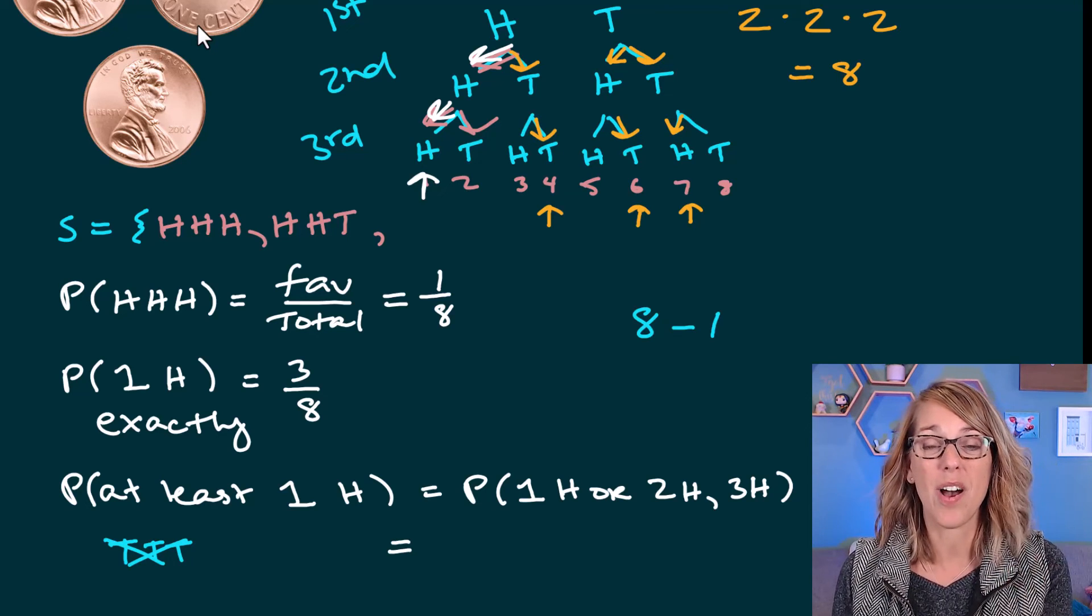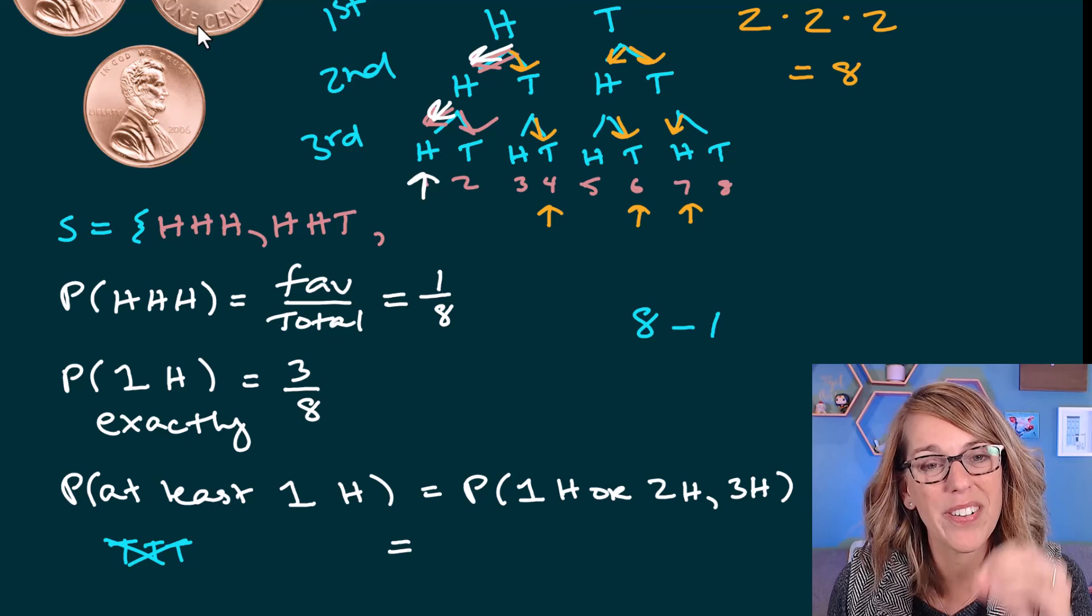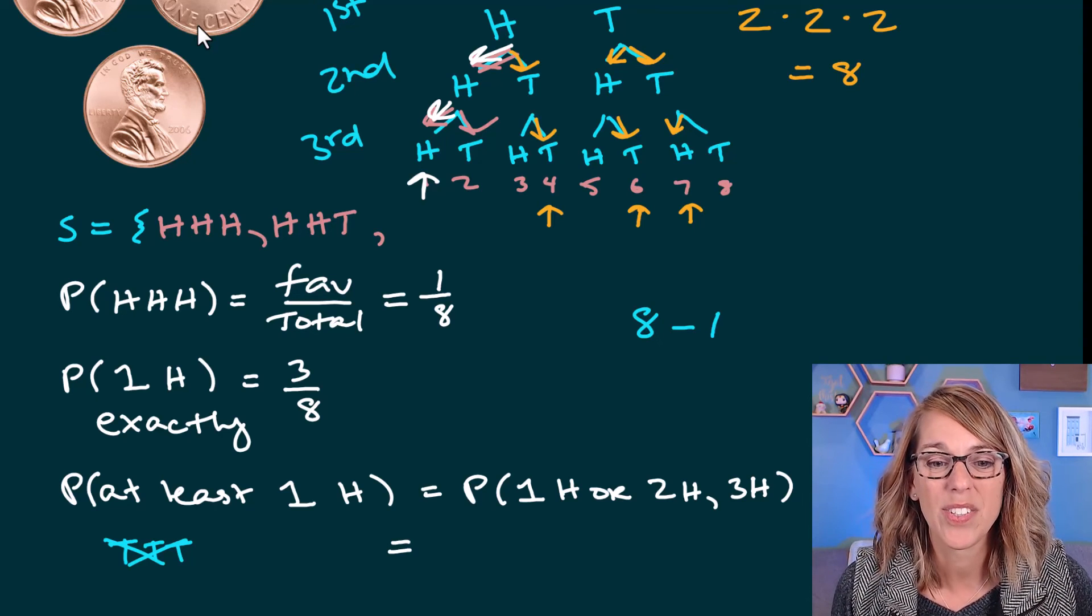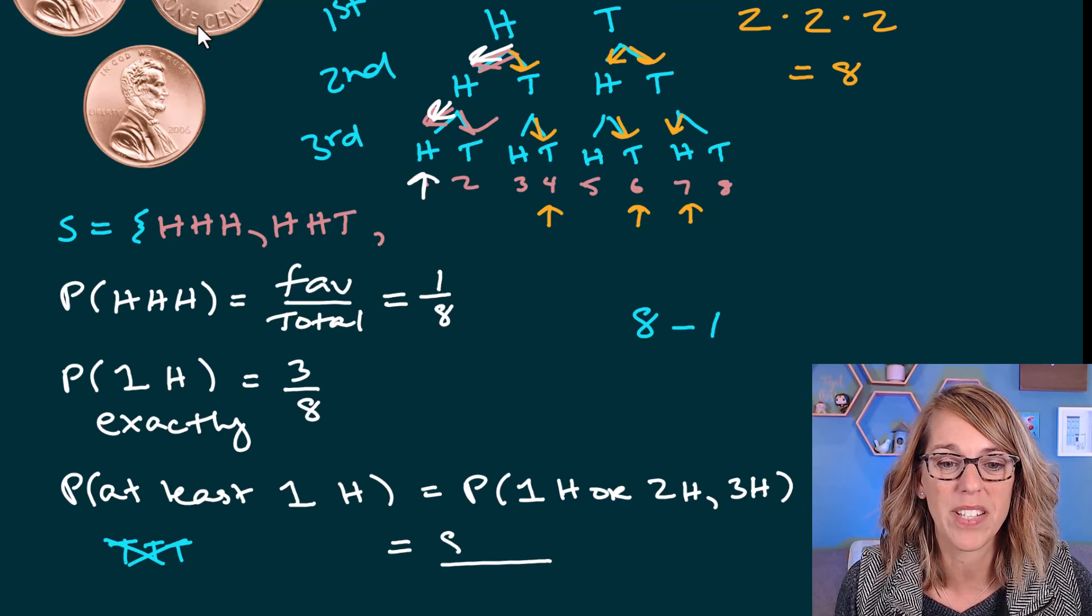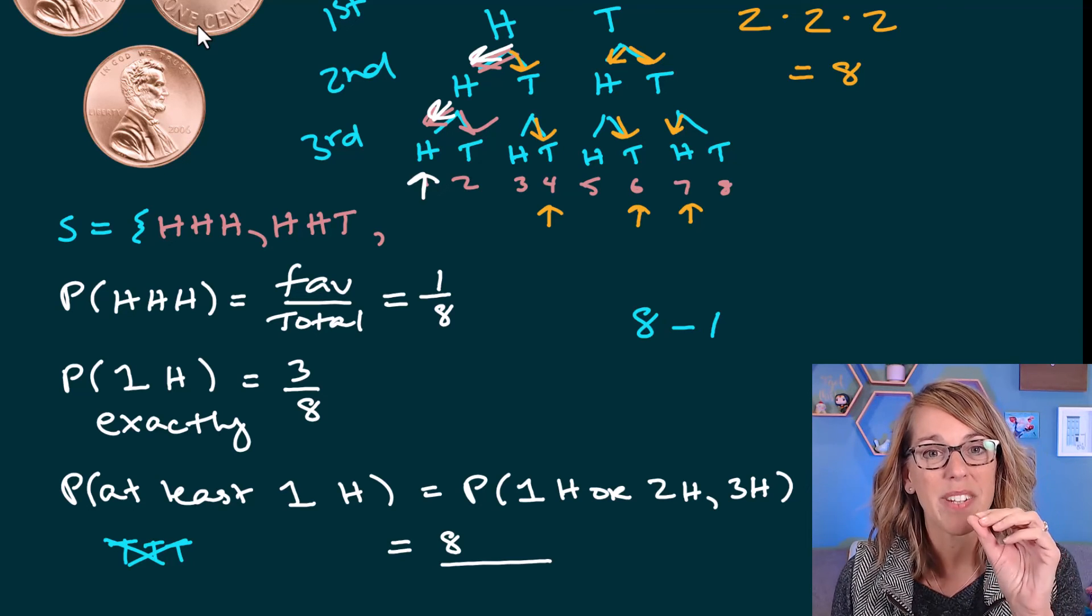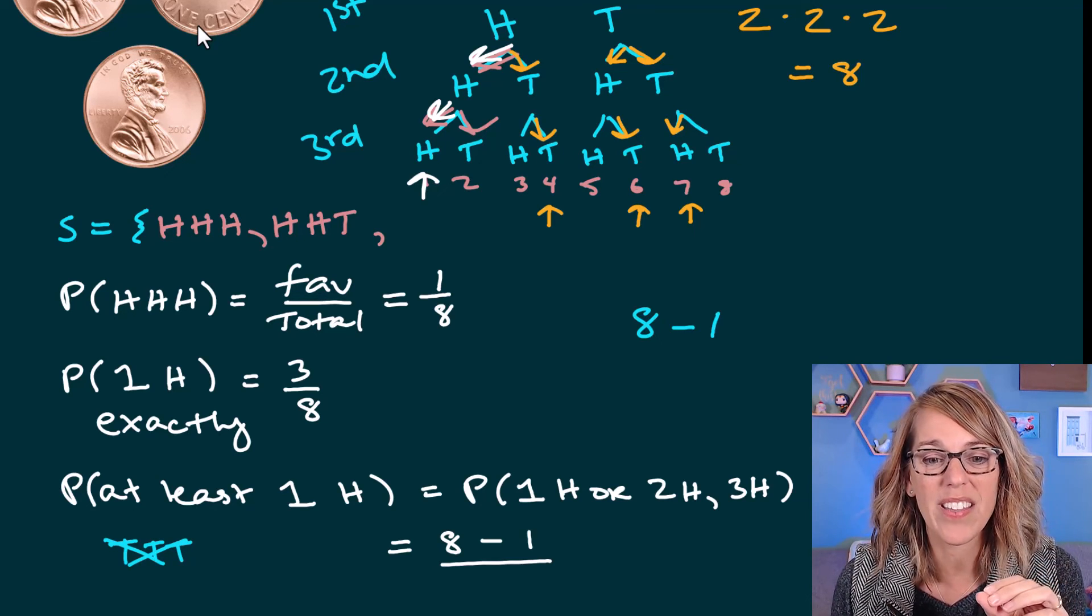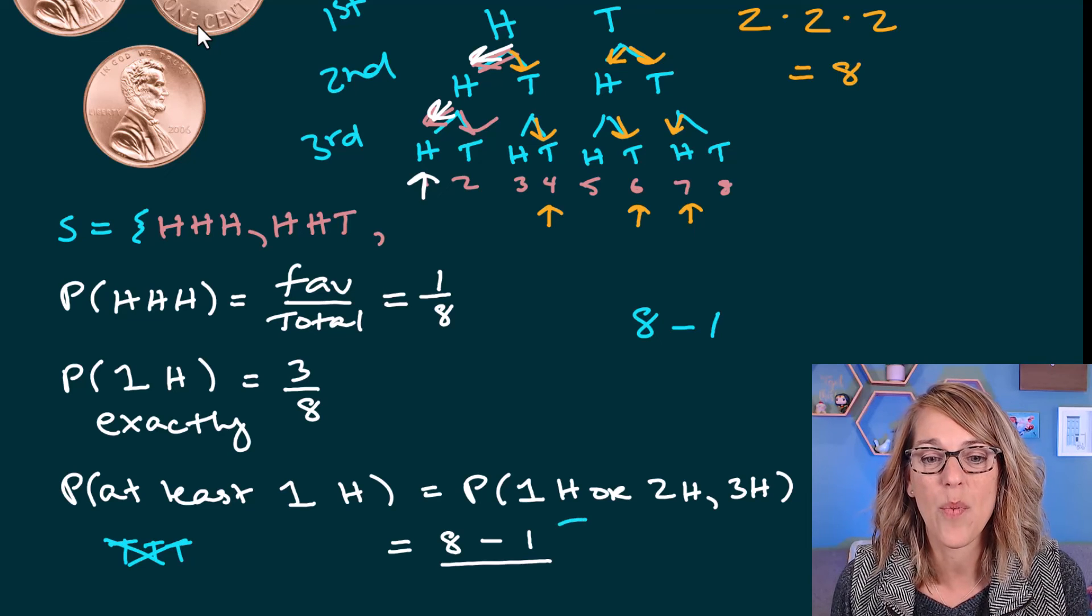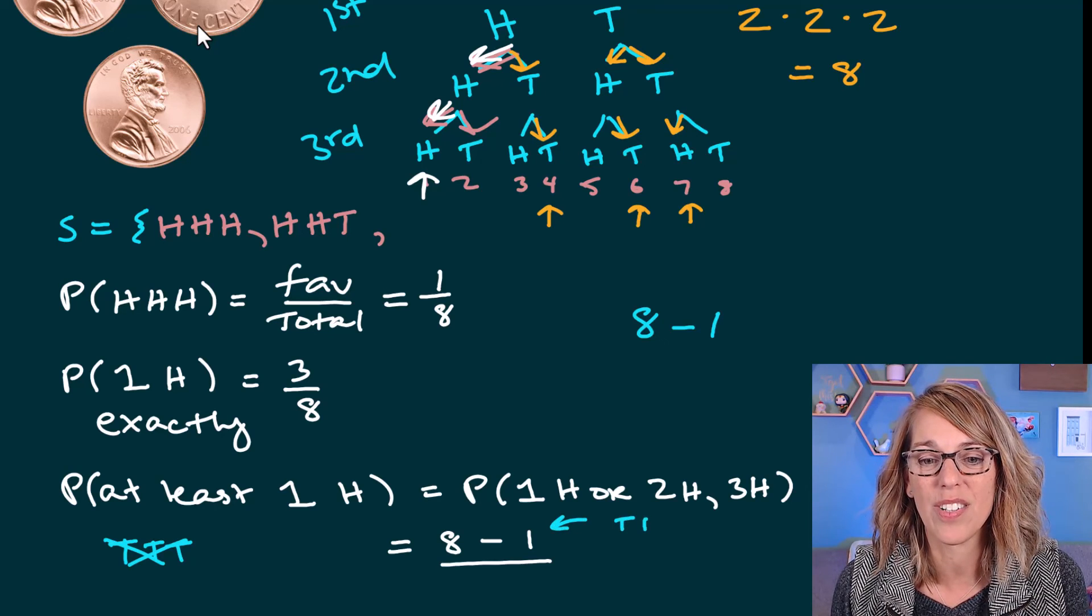So to come up with this one, I'm actually going to use what we call a complement, sort of working backwards, taking out what you don't want. So for my favorable outcomes, I'm going to take all eight of those that I've got represented up here, and I'm going to take out the one that I don't want. And that one that I don't want was all tails.